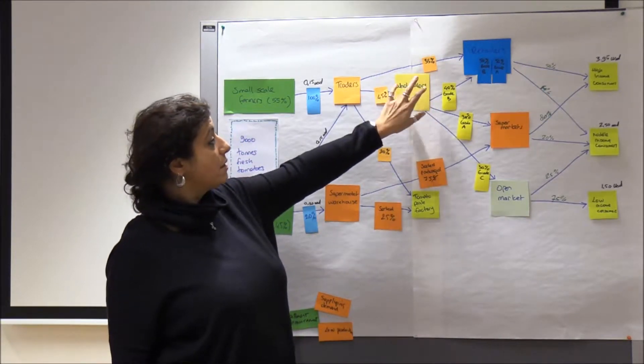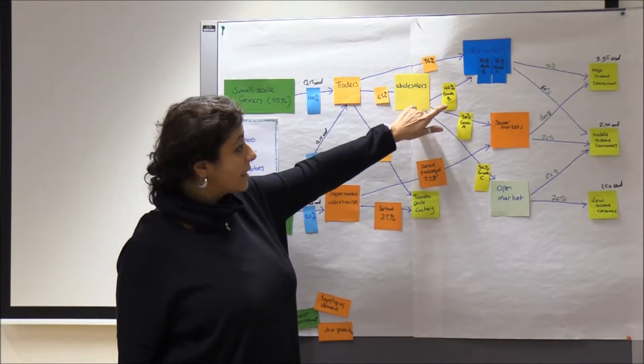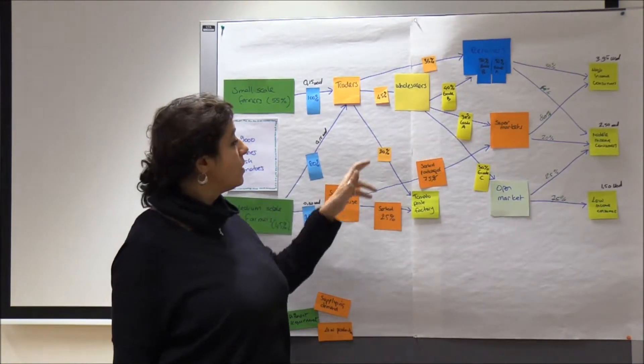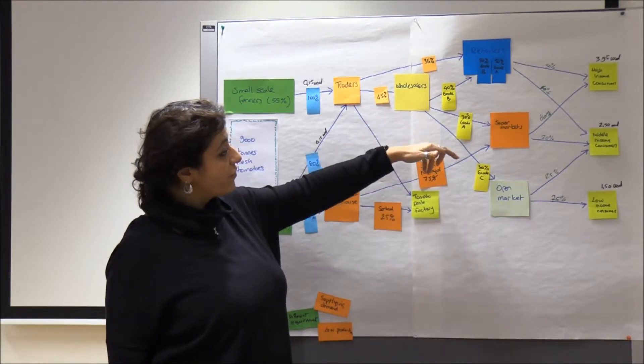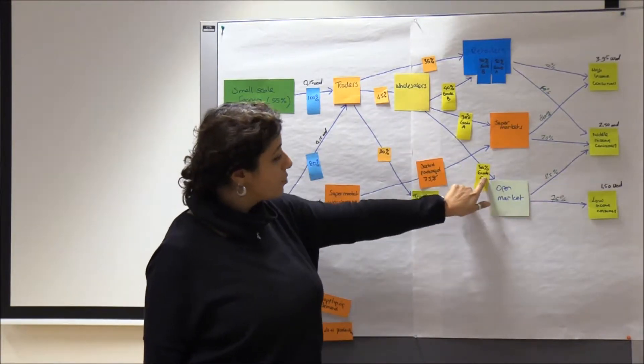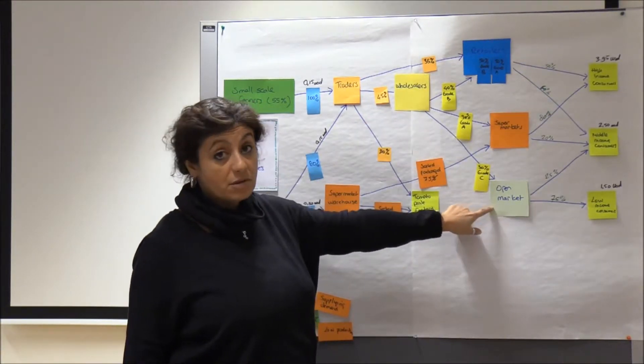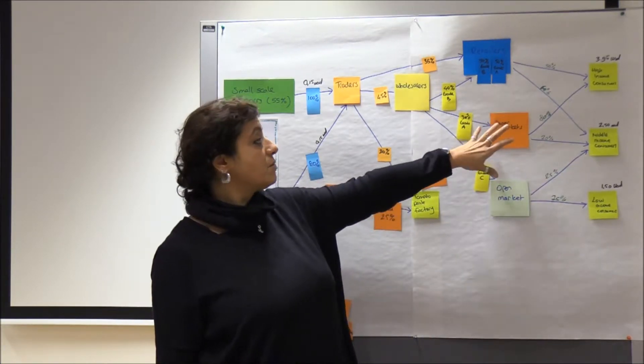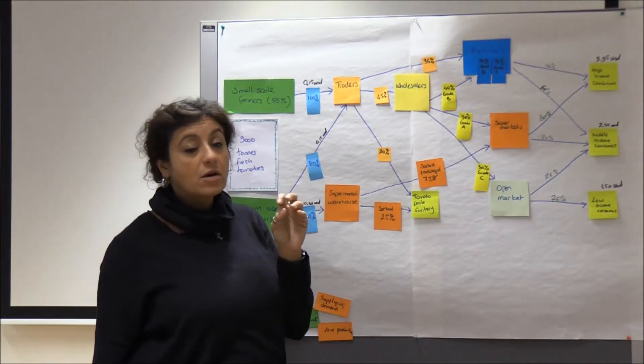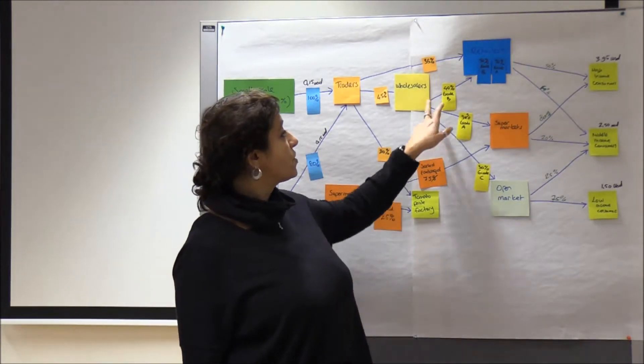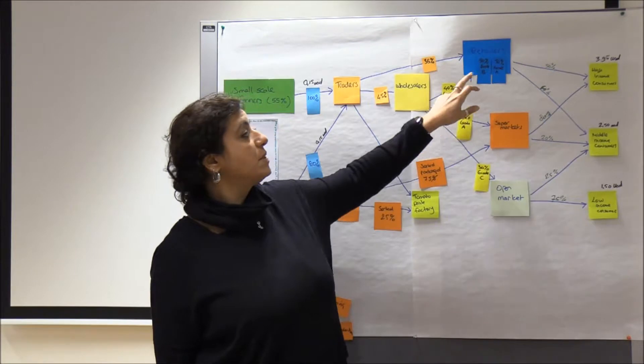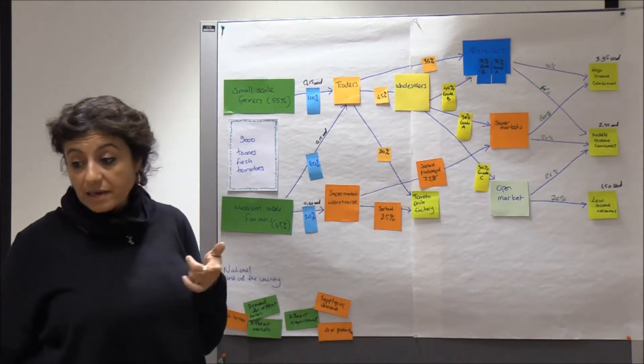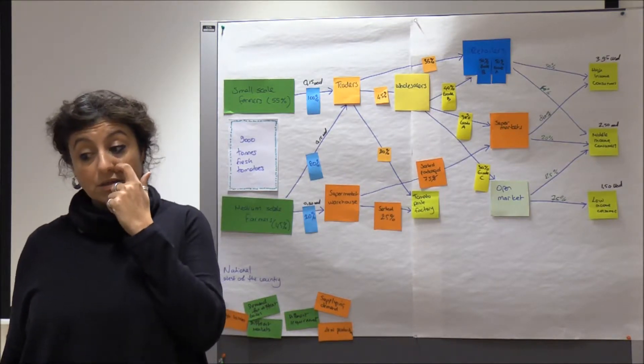But they have three different grades and based on different grades they do, they send the produce to different markets. 30% grade C to the open market because it needs to be sold very quickly. 30% grade A to the supermarkets because this is the market where the higher income consumers goes the most. And 40% grade B goes to the retailer that can then sell directly to the consumers. So this was the second step that I tried to undertake.